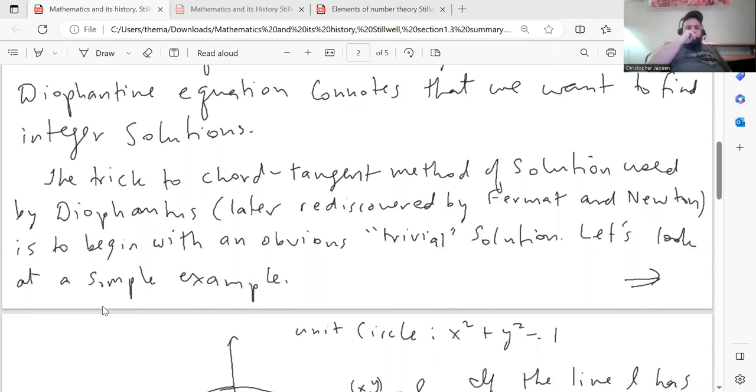But anyway, the trick to solving problems like this, which is called the chord tangent method of solution, which was used by Diophantus, which was forgotten and then later rediscovered by Fermat and Newton in the 17th century, is to begin with an obvious trivial solution. So first you find an obvious solution, and then you use that to find other solutions.